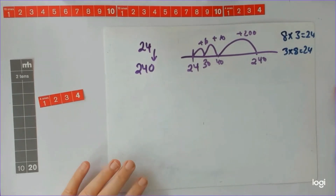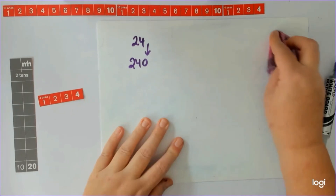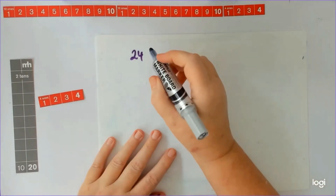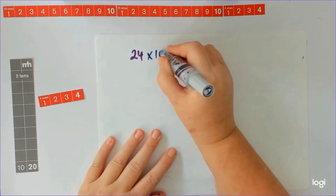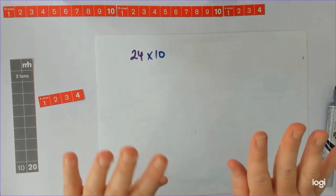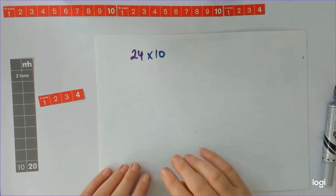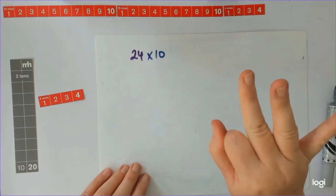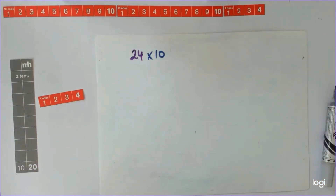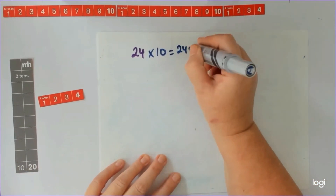The first thing we did was: 24 times 10. I said, I've got 10 fingers, you've got 10 fingers — we'll do all of those fingers and then four more. So we literally went 10, 20, 30, 40, 50, 60, 70, 80, 90, 100, and again, then four more fingers. We were happy that that was 240.